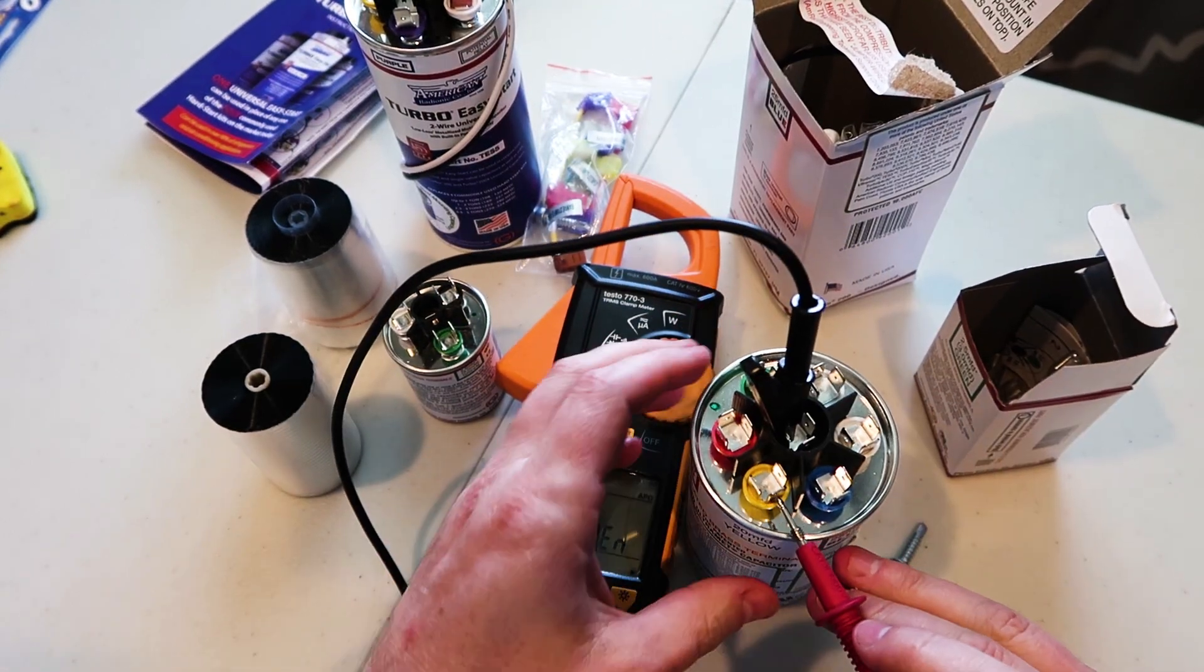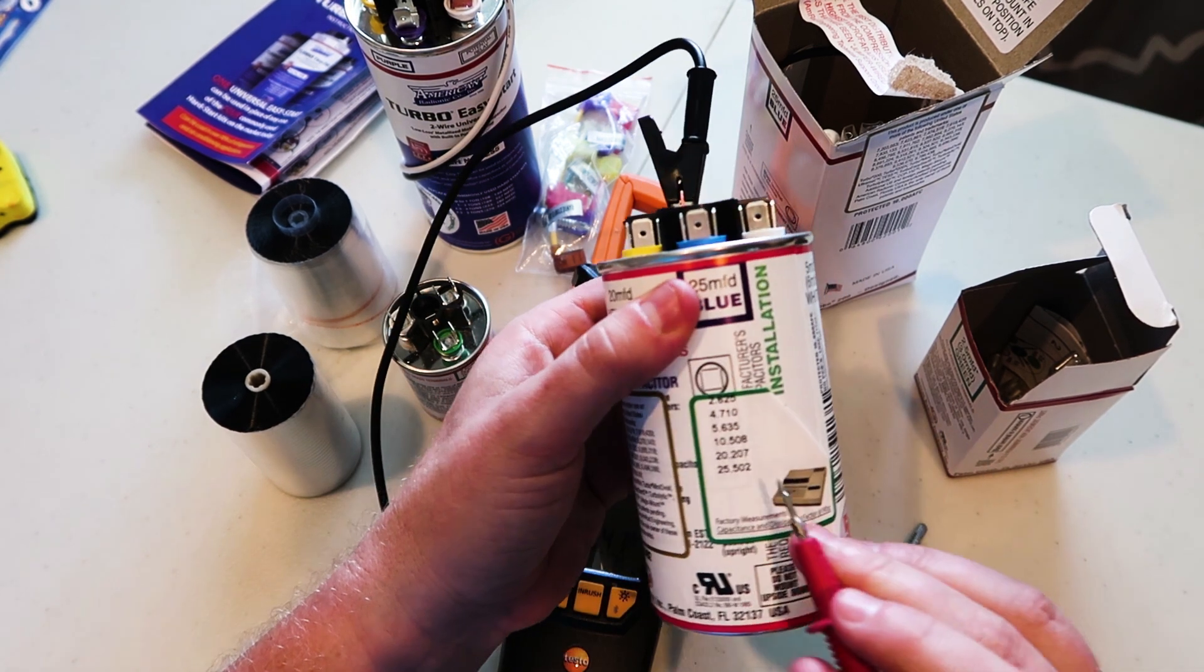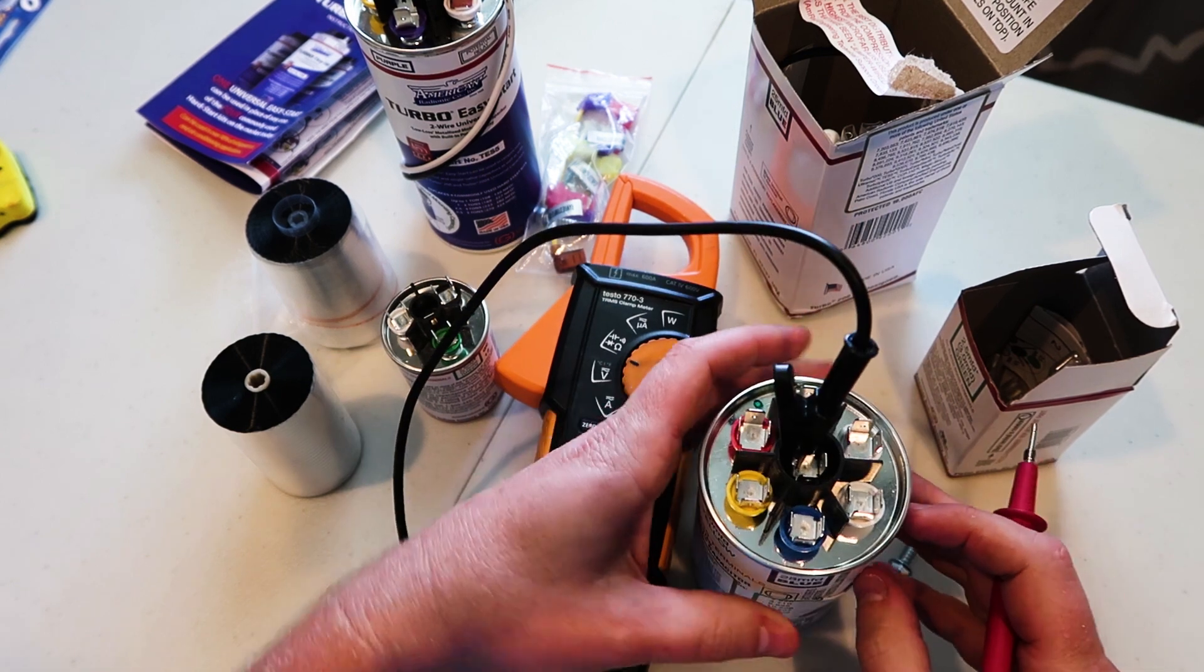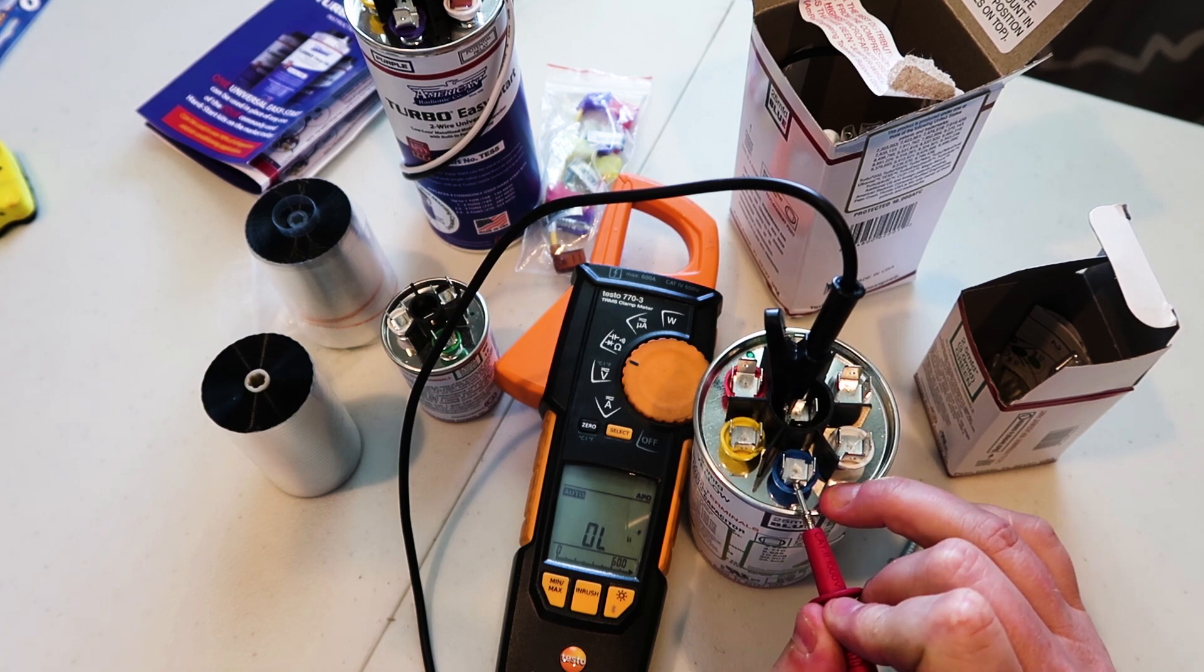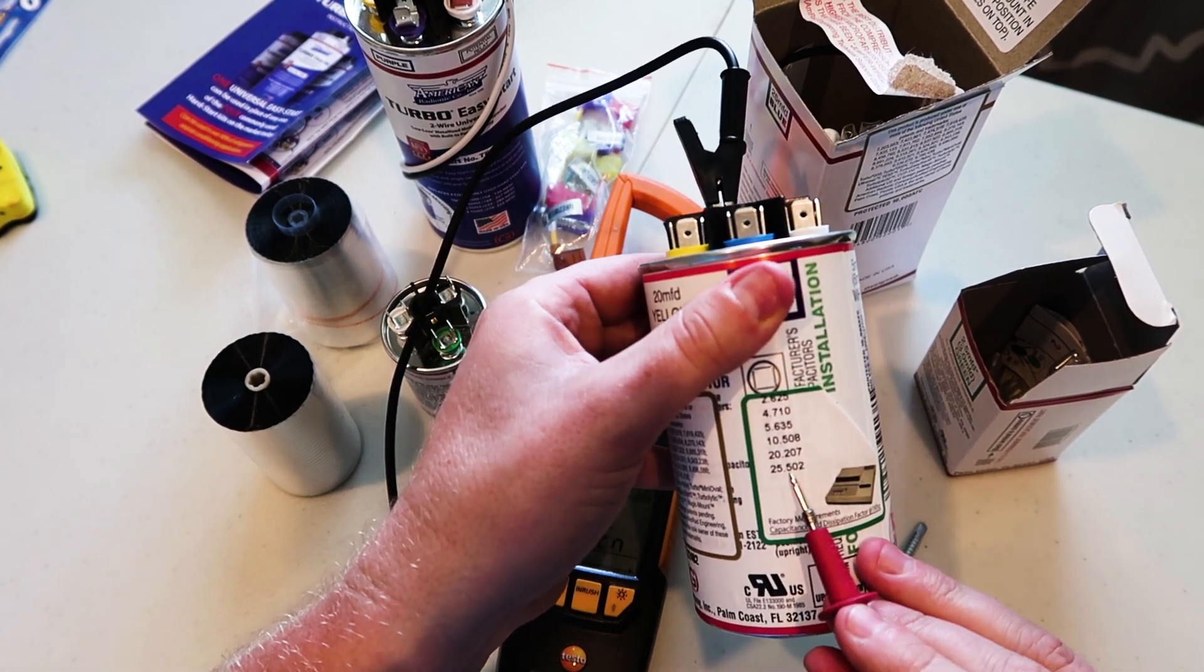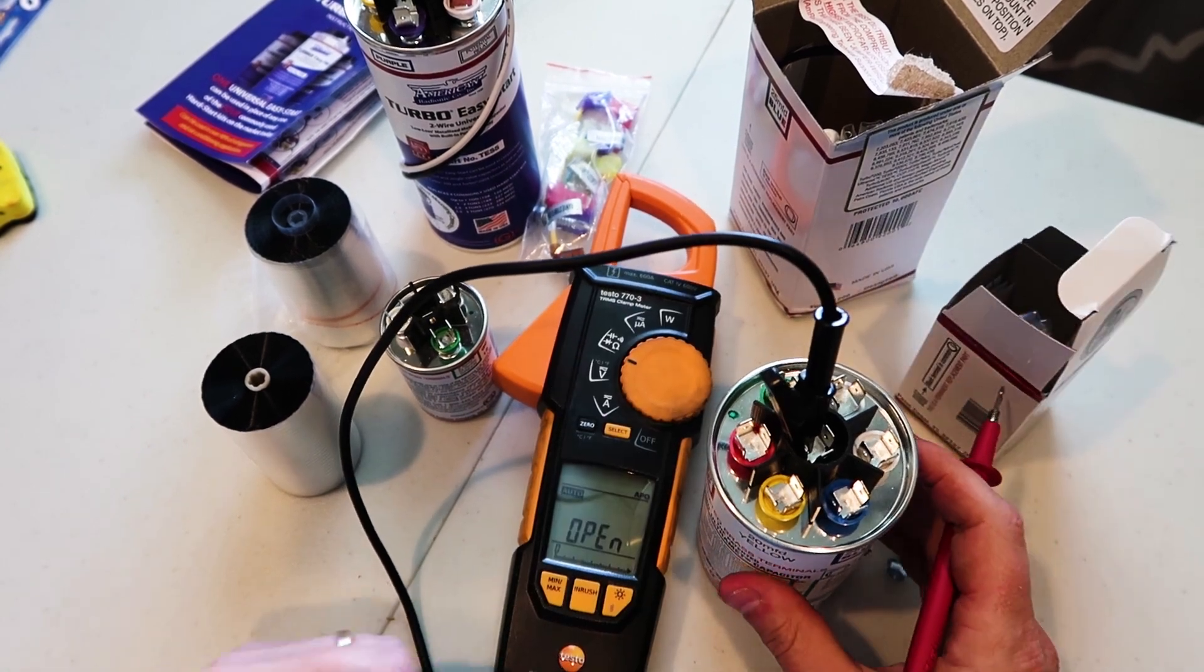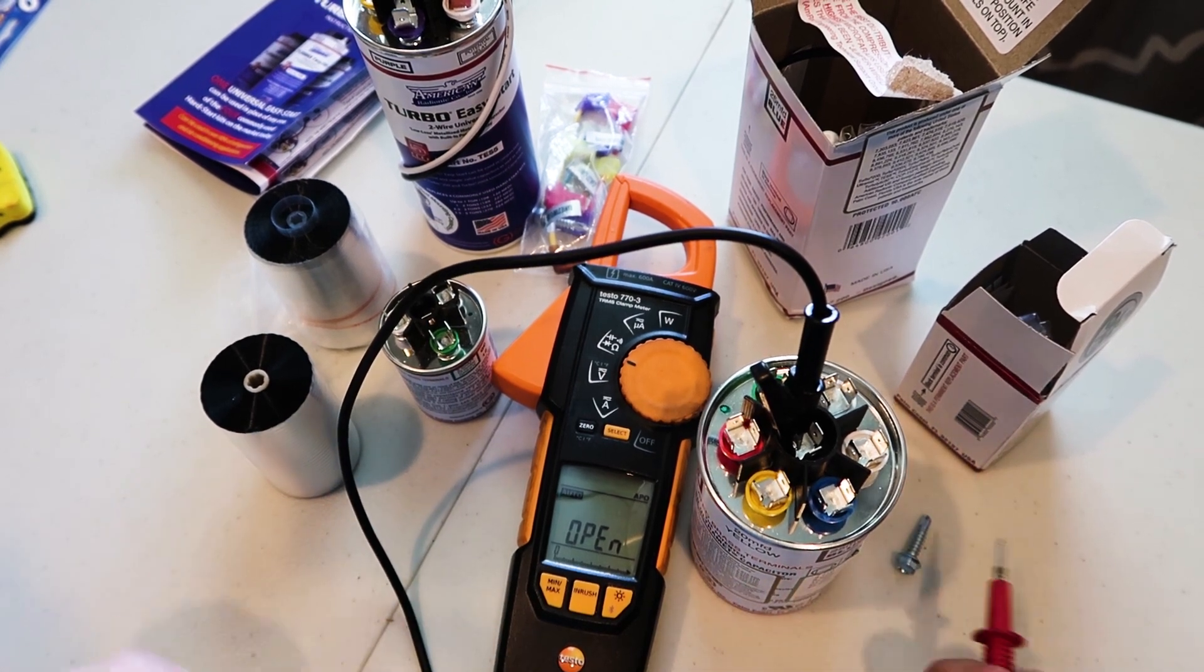All right, let's read the 20 microfarad one. 20.12. Let's see what it says. 20.207. So again, right there, right within what we would expect to see. The 25 microfarad capacitor. 25.41. 25.502. So you get the point. When Amrad writes on their capacitor what the exact values are, they're not playing around. That really is the exact values.